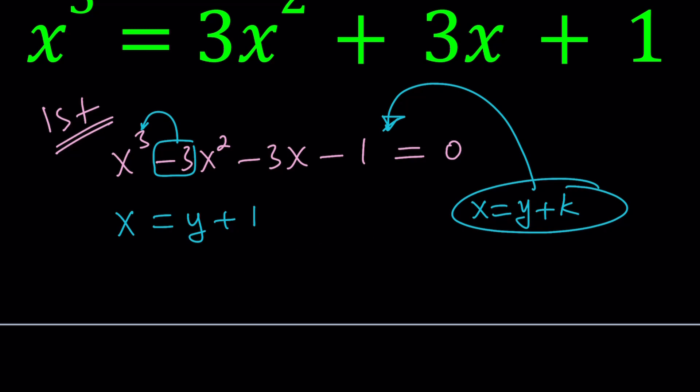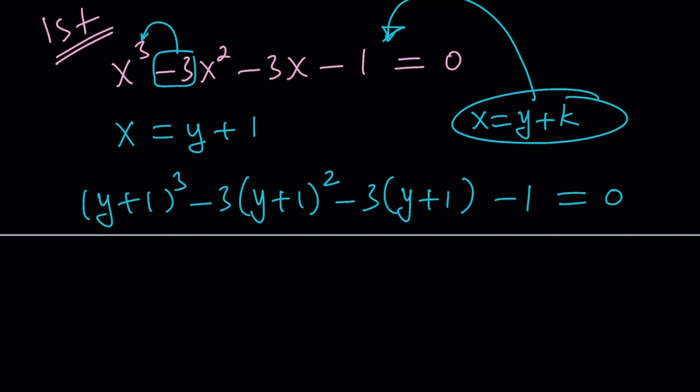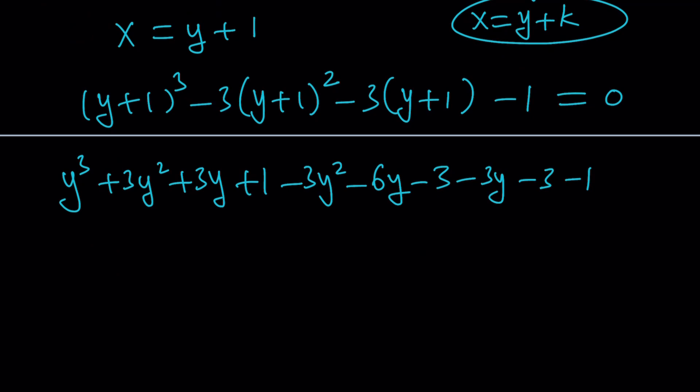Now, we're going to replace x with y plus 1, and if we do, we get something like this. y plus 1 to the third power minus 3 times y plus 1 squared minus 3 times y plus 1 minus 1 equals 0. And then let's go ahead and expand everything. y cubed plus 3y squared plus 3y plus 1 minus 3y squared. Notice that that cancels out, minus 6y minus 3, minus 3y minus 3 minus 1. A lot of minus signs, right? And that equals 0. So, y squared cancels out. That was the goal.